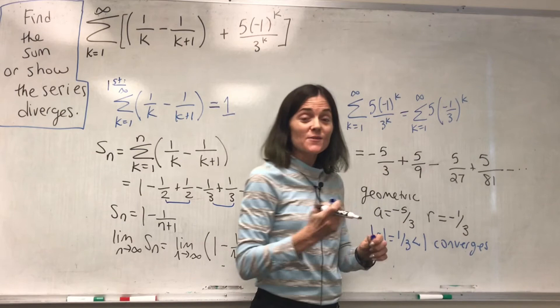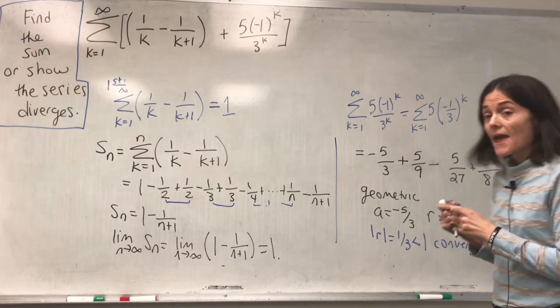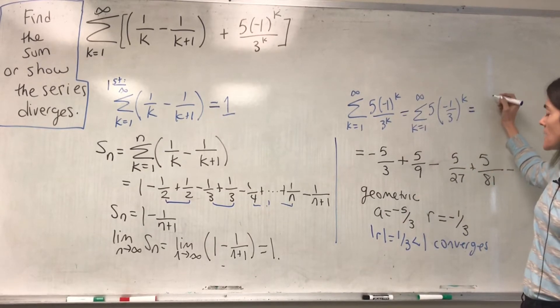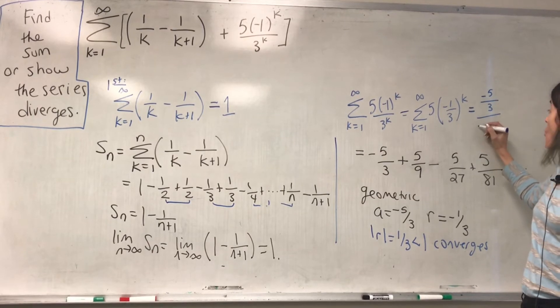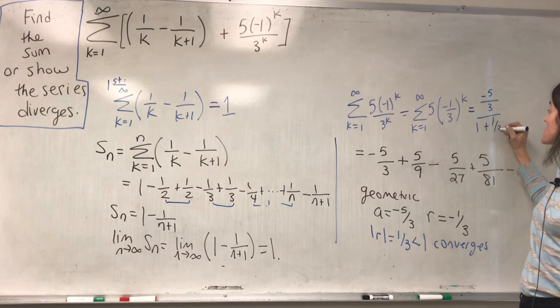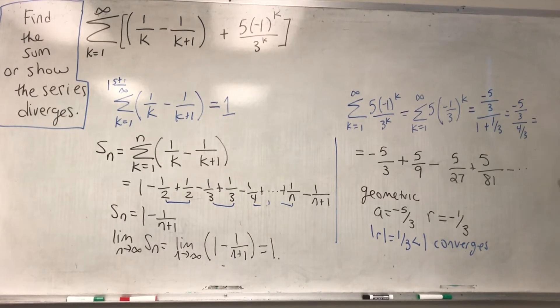And we also know the sum. This converges to A over 1 minus R. So this sum is A over 1 minus R becomes a plus. This is minus 5 thirds over 4 thirds. When you invert, multiply, what do we get? Minus 5 over 4.